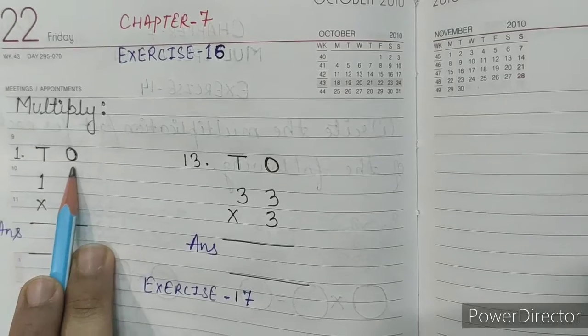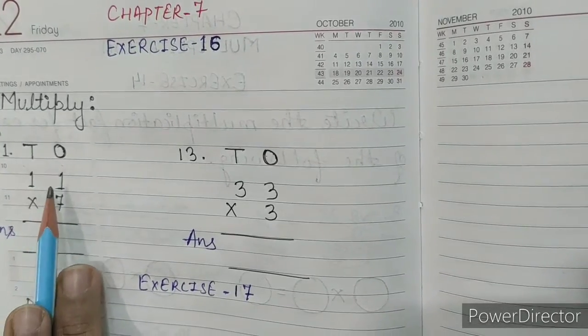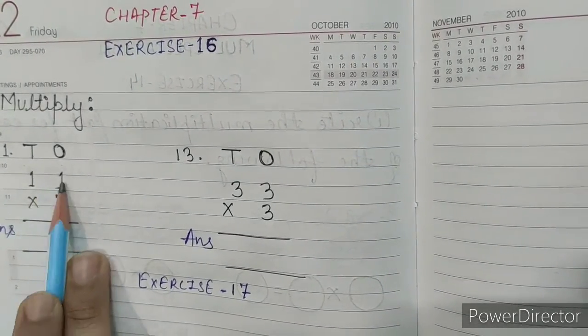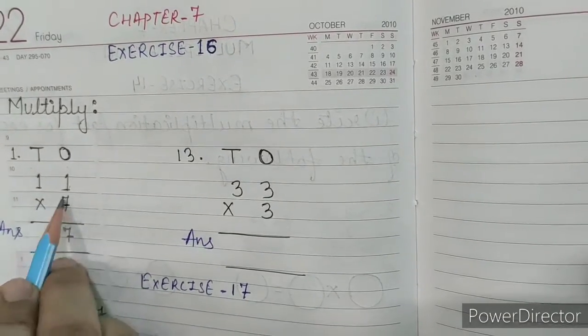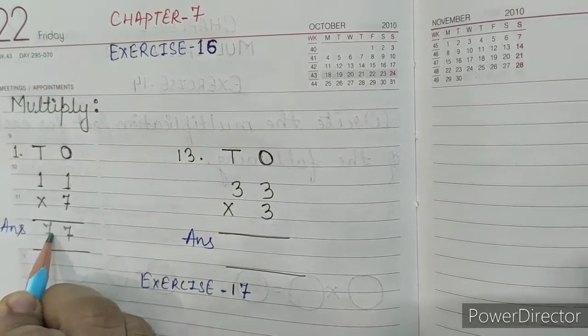Number 1, ones, tens. So, 11 into 7. 7 into 1, 7 ones are 7.